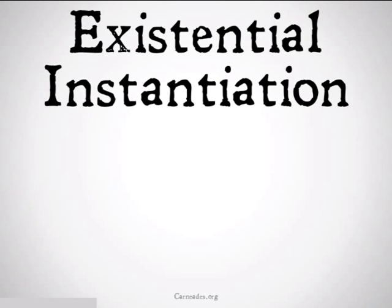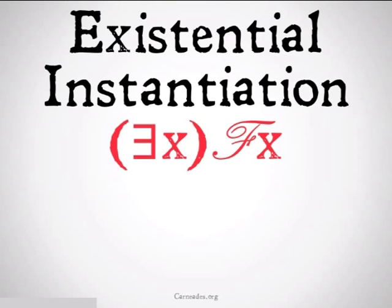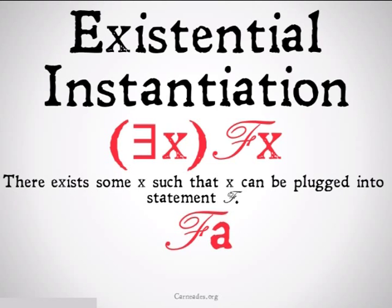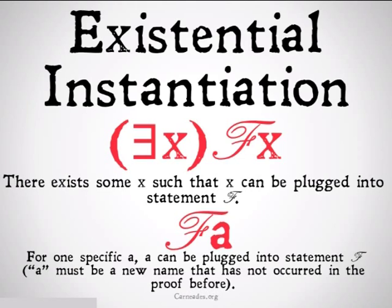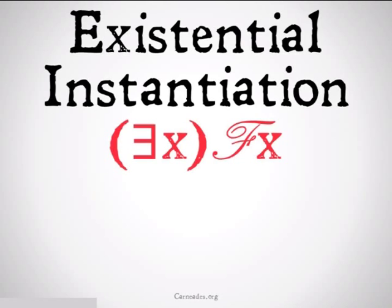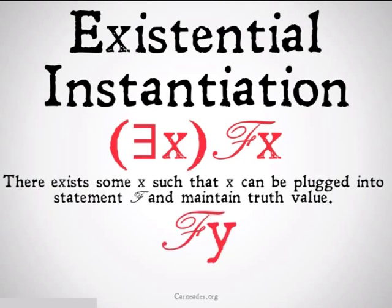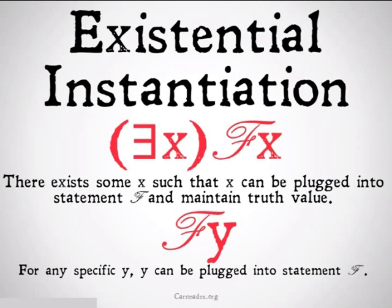Next up, we have existential instantiation. It's going to be: from 'there exists an X such that X can be plugged into statement F,' we conclude that one specific A can be plugged into statement F. It's important to note that A has to be a new name that has not occurred somewhere in the proof before. What is not valid is concluding from 'there exists an X such that FX' that for any Y, Y can be plugged into statement F — we can't go from a particular case to a more general case. This is invalid.